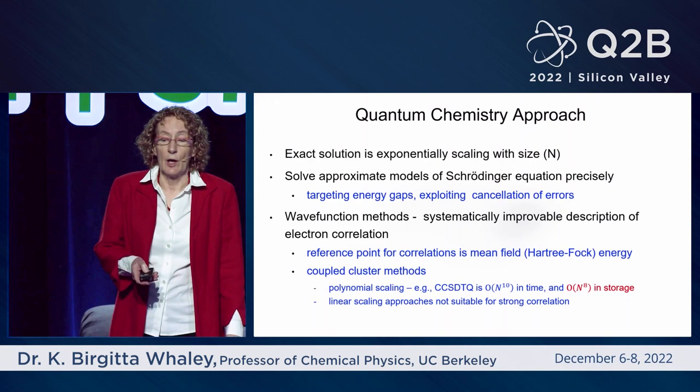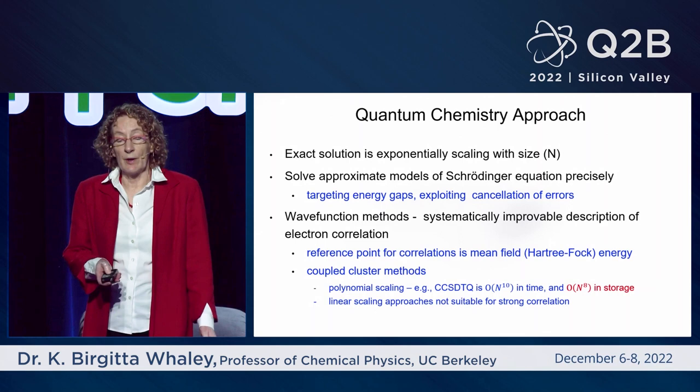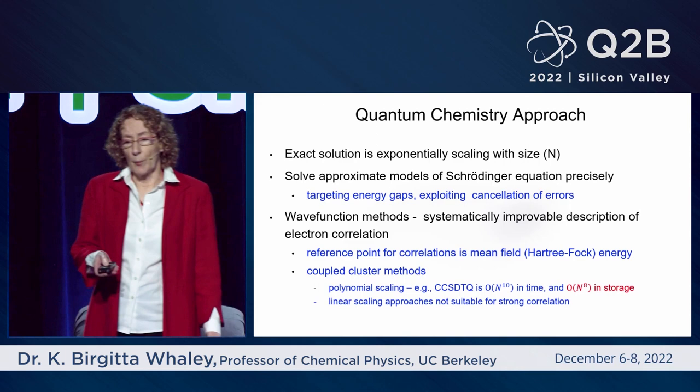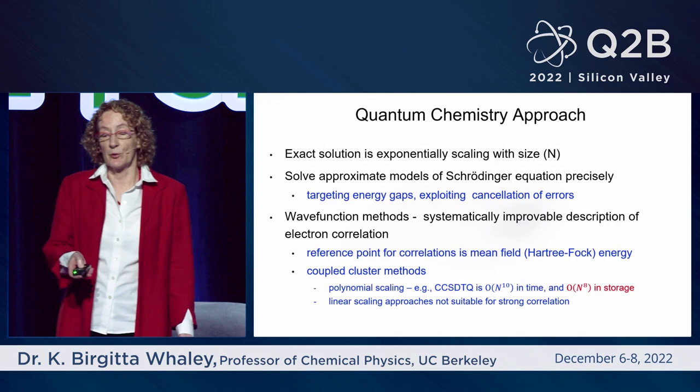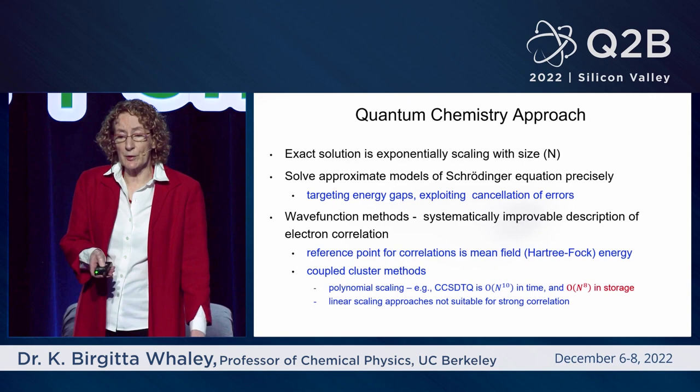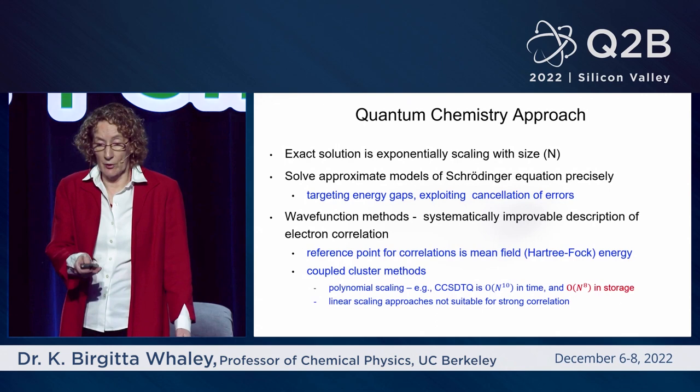The reference point is the mean field energy. A method very commonly used is called coupled cluster — a polynomial scaling method. It's O(N^10) in time, which doesn't sound too bad, but it's O(N^8) in storage, which is really the limiting part in quantum chemistry today. There are linear scaling approaches being developed, but they are certainly not suitable for strong correlation.